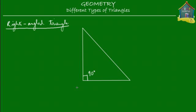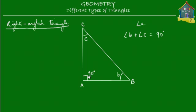A right angle triangle, such as triangle ABC, is simply a triangle that has one angle equal to 90 degrees. An interesting thing about right angle triangles is that the sum of the other two angles is also equal to 90 degrees. So if you take this angle — call it angle C — and this angle over here — call it angle B — then angle B plus angle C is also equal to 90 degrees. We know that angle A is equal to 90 degrees, and we're going to show that angle B plus angle C is also equal to 90 degrees.